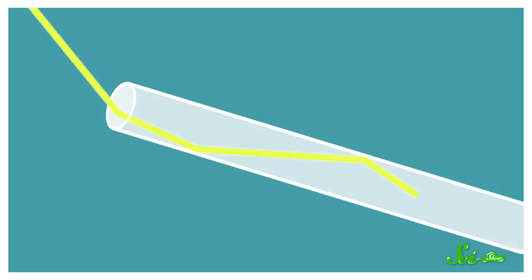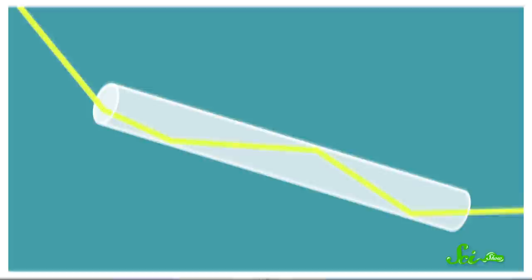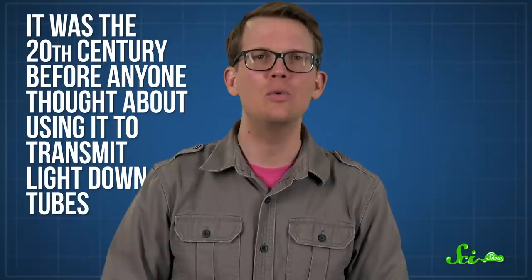Then, the beam can travel all the way down a fiber this way, bouncing back and forth until it comes out the other end. Now, total internal reflection isn't new or limited to glass tubes. In fact, people have known about it since ancient times. But it was the 20th century before anyone thought about using it to transmit light down tubes.